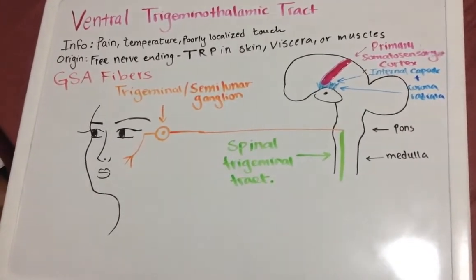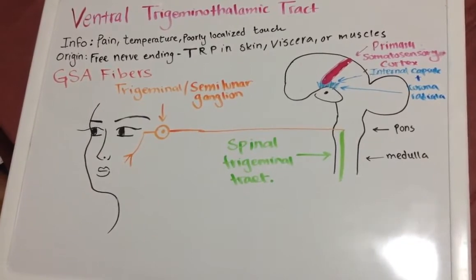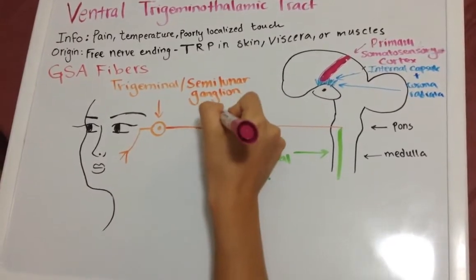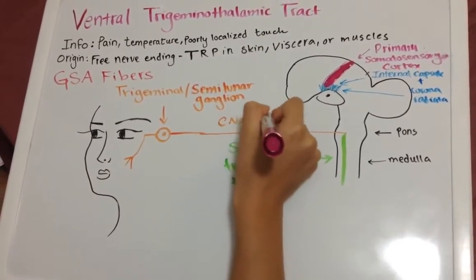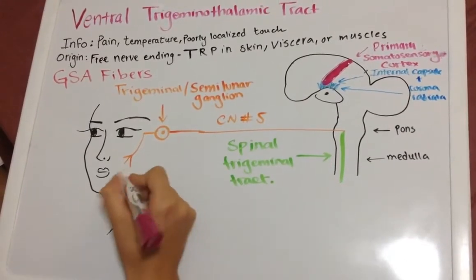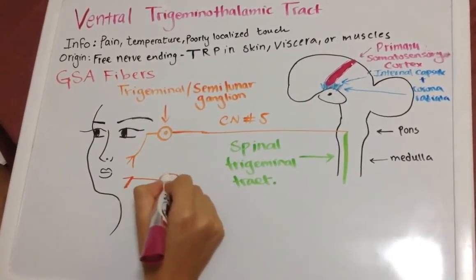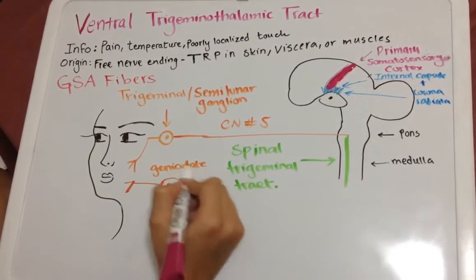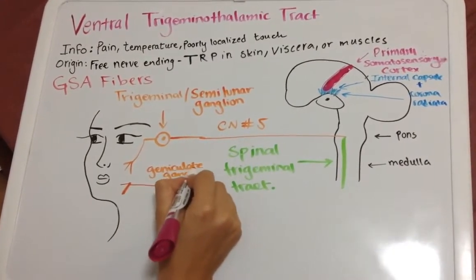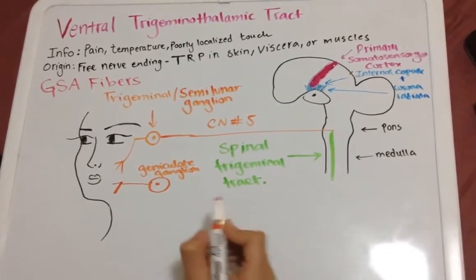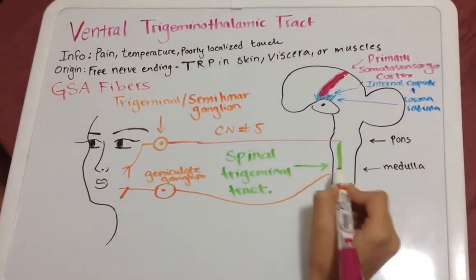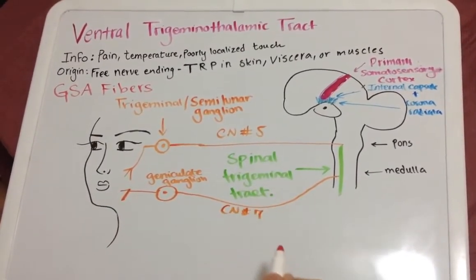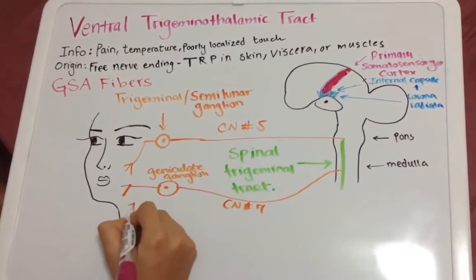The reason this tract is really important is because it has four cranial nerves that go through it. This is cranial nerve five. It will also take cranial nerve seven — so we have seven over here, and this would be the geniculate ganglion, where the cell bodies for cranial nerve seven are located. So cranial nerve seven, the facial nerve, also joins this tract.